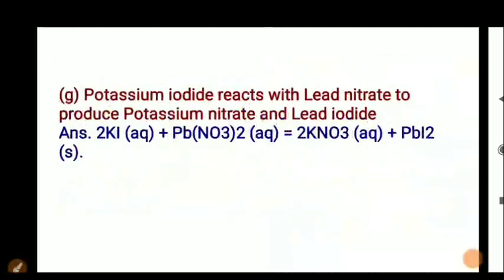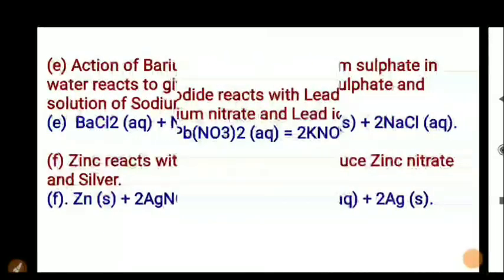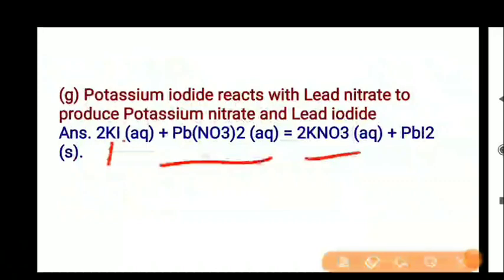Potassium iodide reacts with lead nitrate to produce potassium nitrate. Potassium is K and iodide is I. The equation is 2KI plus Pb(NO3)2 gives 2KNO3 plus PbI2 — lead iodide. This is your answer G.